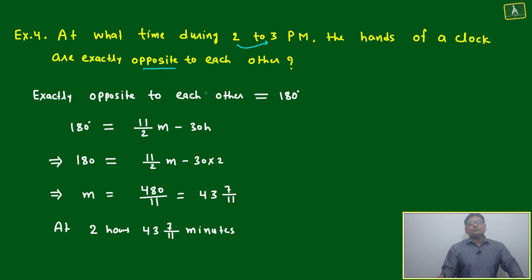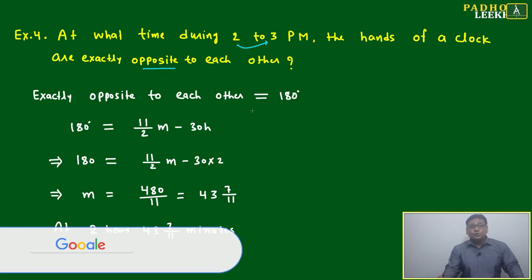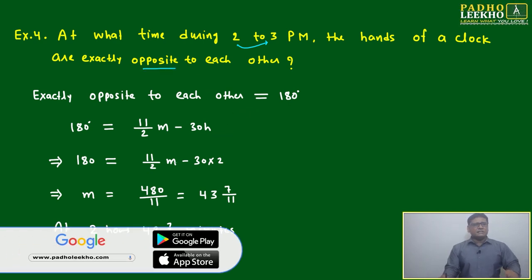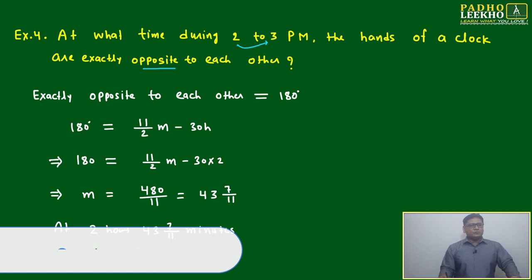The hands of a clock are exactly opposite to each other. Earlier we have seen zero; last example, this example 180. Then here 180 degree we have to put, and this equation we have to solve. It will be 2 hours 43 and 7/11 minutes.